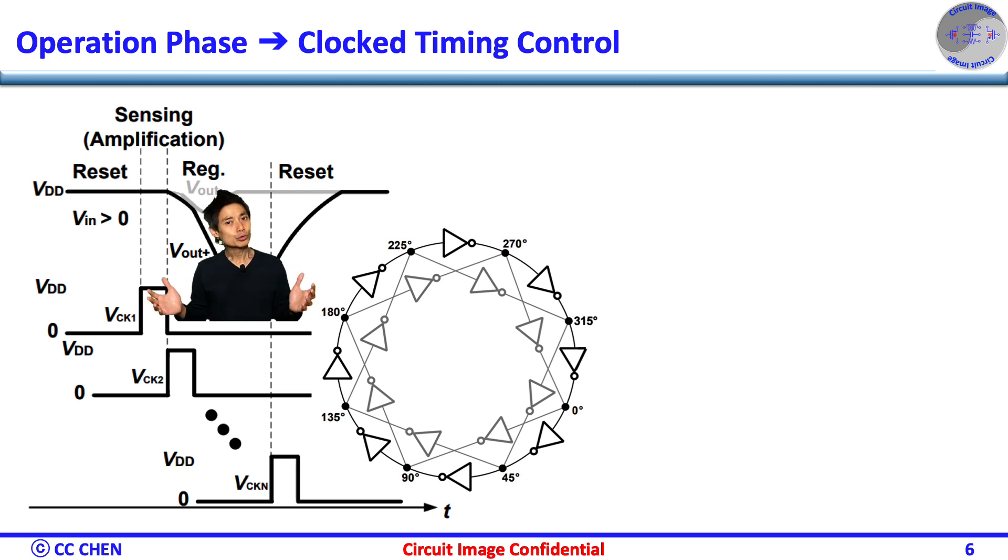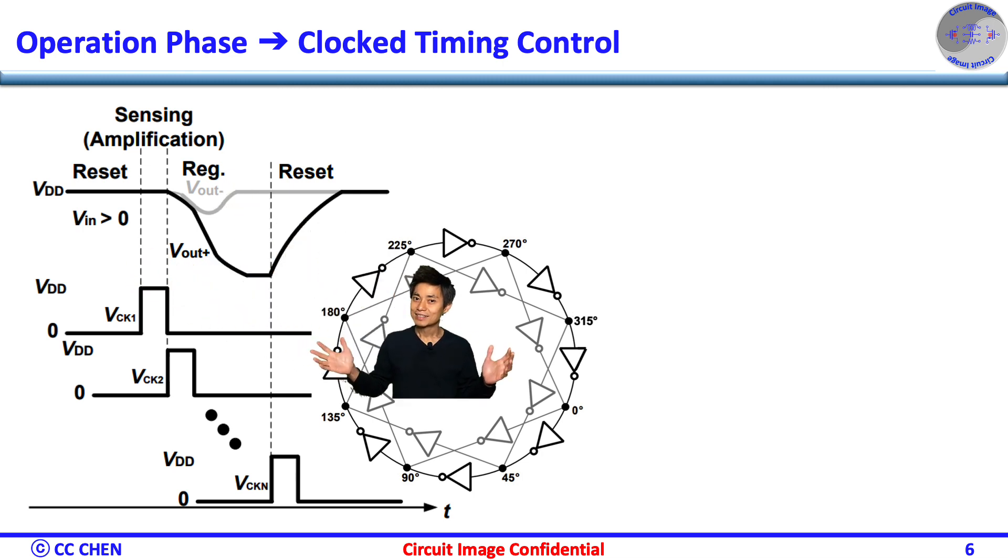But how do we control three operation phases? Sensing, regeneration, and reset? Right, we could do the multi-phase clocking to control the latch properly. But that complicates the clocking path, which would contribute lots of power overhead, even though we save lots of power on the regeneration amplifier.